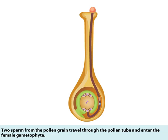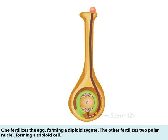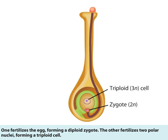Two sperm from the pollen grain travel through the pollen tube and enter the female gametophyte. One fertilizes the egg, forming a diploid zygote. The other fertilizes two polar nuclei, forming a triploid cell.